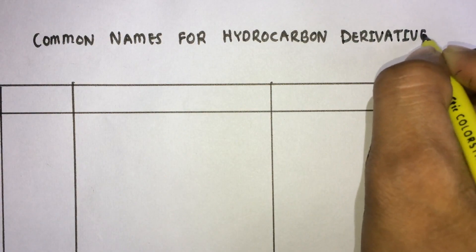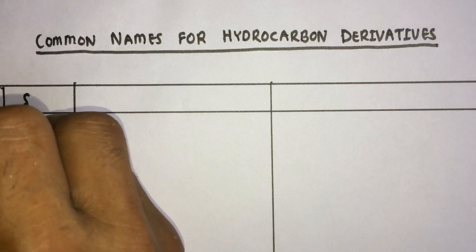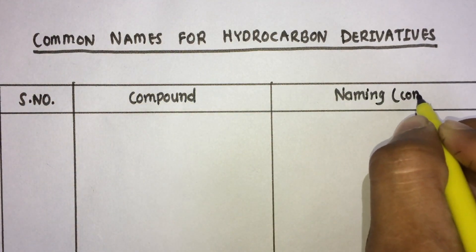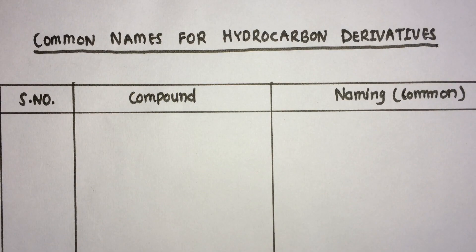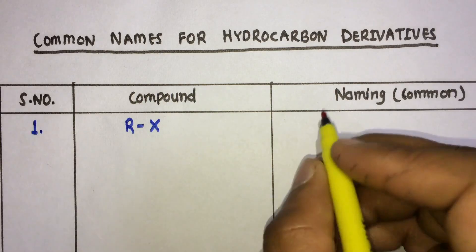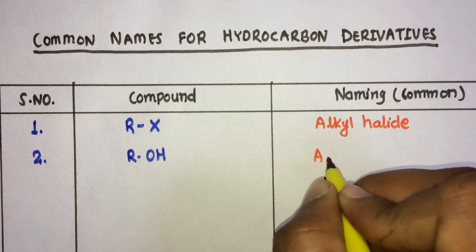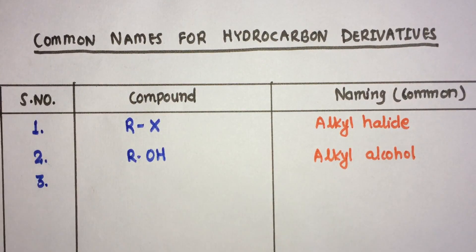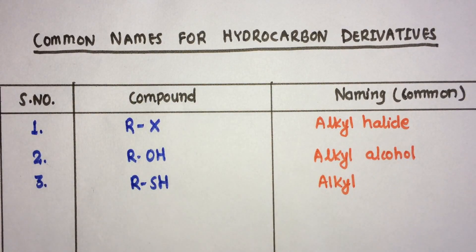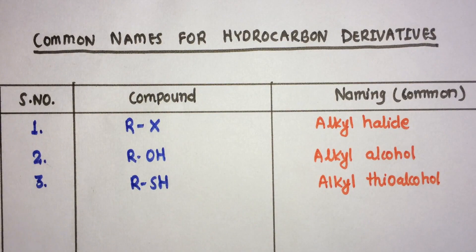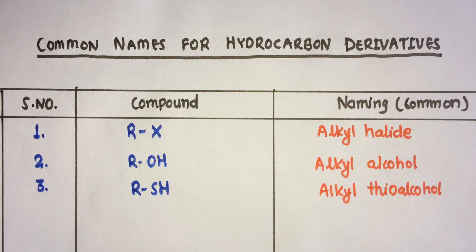Various hydrocarbon derivatives have different common names loosely based on certain rules. The first one is RX, which is alkyl halide. The second is ROH, which is named as alkyl alcohol. The third is RSH, which is named as alkyl thio alcohol or alkyl mercaptans.